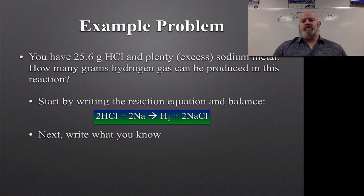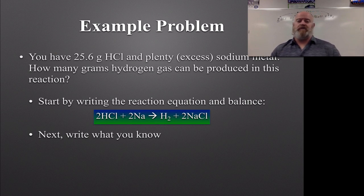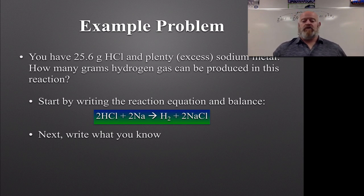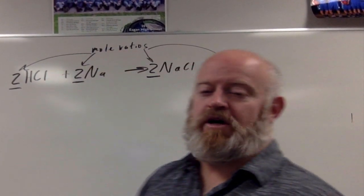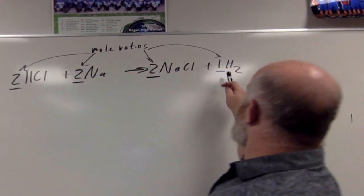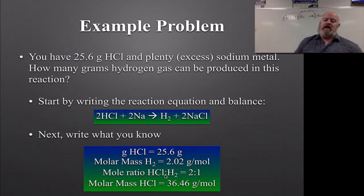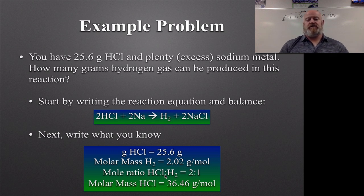Next, write down everything we know to get organized. We have HCl with a starting mass of 25.6 grams. The molar mass of H₂ is 2.02 grams per mole. The mole ratio between HCl and H₂ is 2 to 1. And the molar mass of HCl is 36.46 grams per mole. That's what we know going into the problem.